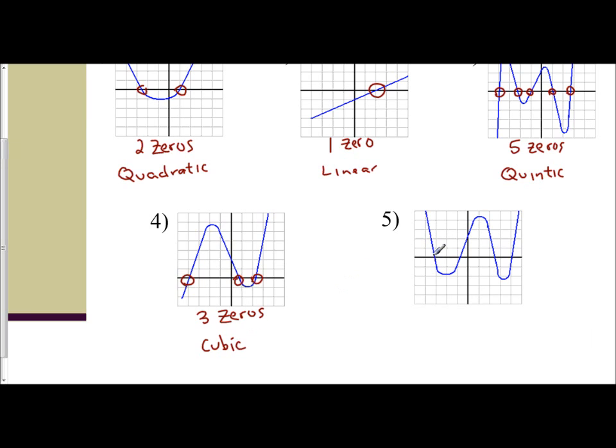And lastly, I have number five with one, two, three, four zeros. Four zeros, and four zeros represents a quartic function. I'm going to go ahead and give you a heads up: a lot of students get quadratics and quartics confused because whenever you hear the prefix quad, you think of four. However, in mathematics, you know quadratic has two zeros.